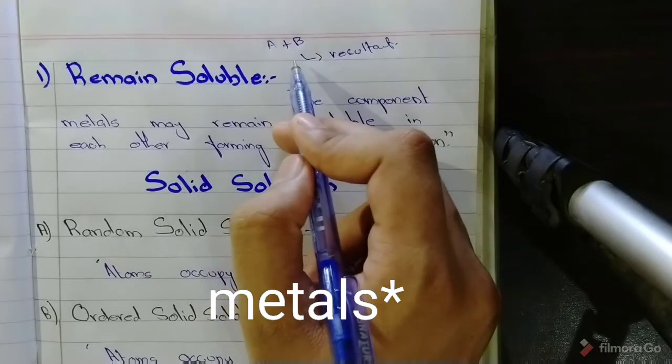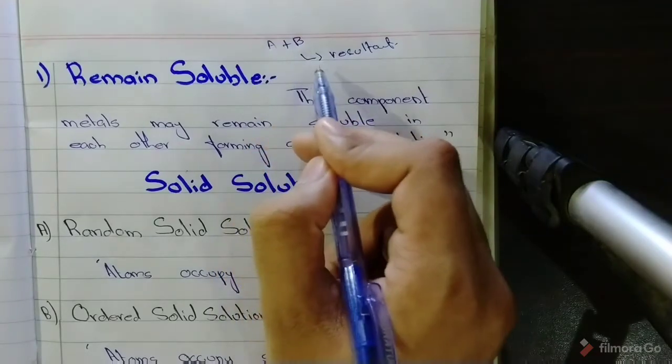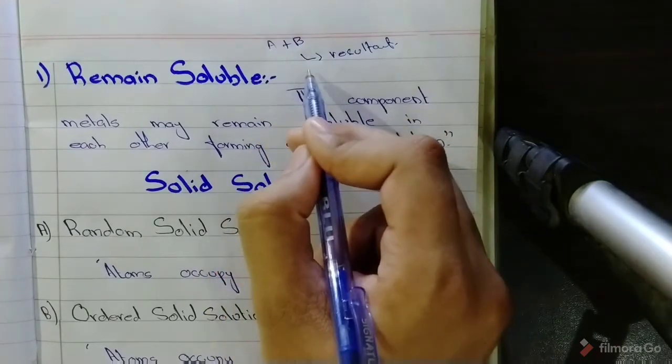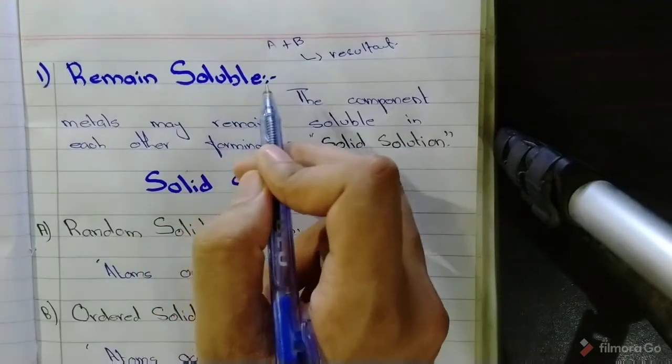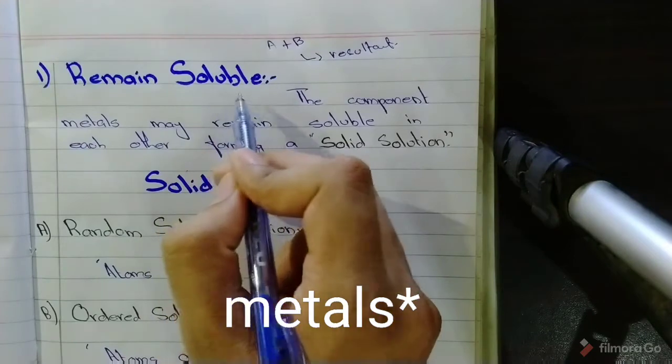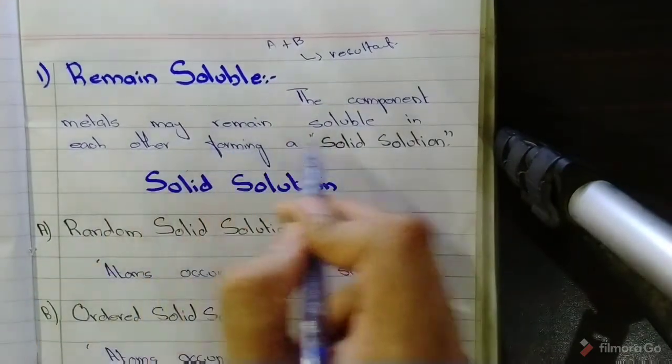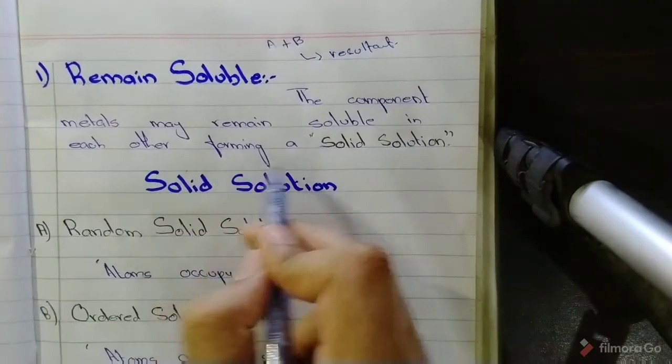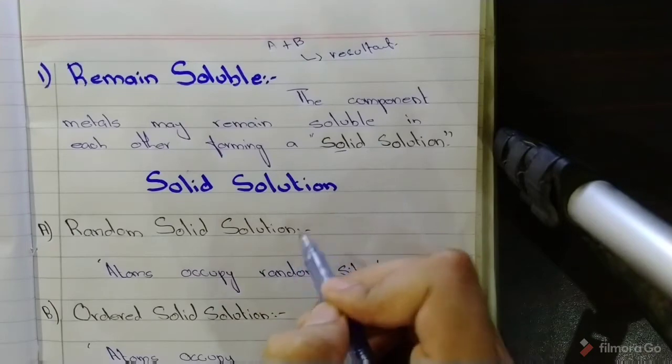When you melt two alloys, mix them, and allow them to cool, one of four things can happen. Number one is that these two alloys may remain soluble in each other. The component metals may remain soluble in each other forming a solid solution.